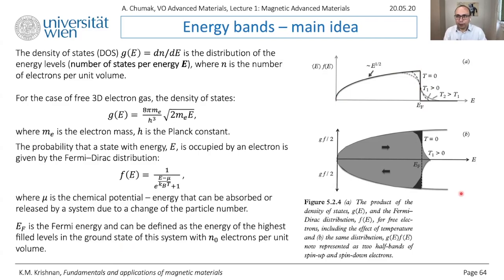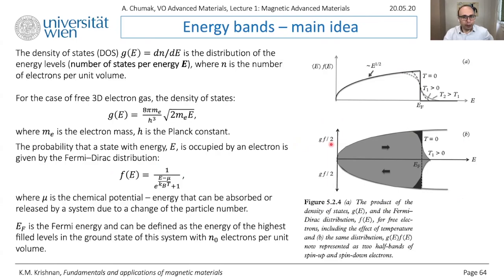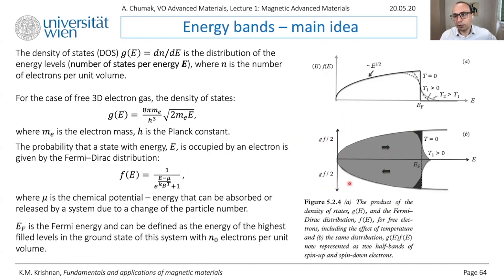What we need to do differently when speaking about magnetism is split all electrons into two parts: spin up and spin down. Instead of the standard picture we come to a new picture where g is the density of states and f is the Fermi-Dirac distribution, multiplied by one half because we split all electrons into two groups — 50% spin up and 50% spin down. The left side considers only spin-up electrons and the right side spin-down electrons. The picture is rotated 90 degrees for convenience so energy is on the x-axis.